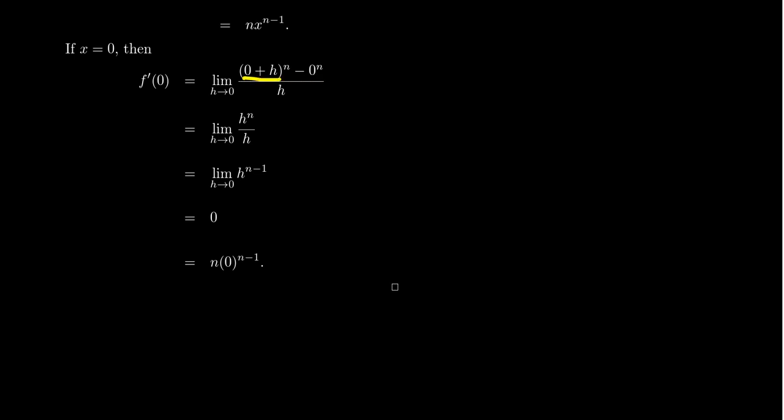Well, if you take 0 plus h, that's just h, so you're going to get h to the n. And if you take 0 to any power, that's just going to be 0. So h to the n minus 0 will just give you h to the n. But then if we have h to the n divided by h, by exponent rules, you can cancel out the h, and so you end up with h to the n minus 1, which as h approaches 0, will then just become 0 to the n minus 1 power, which is equal to 0.